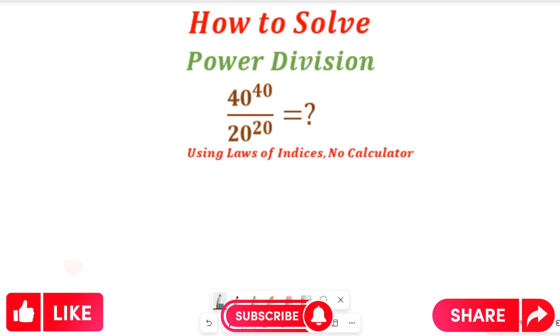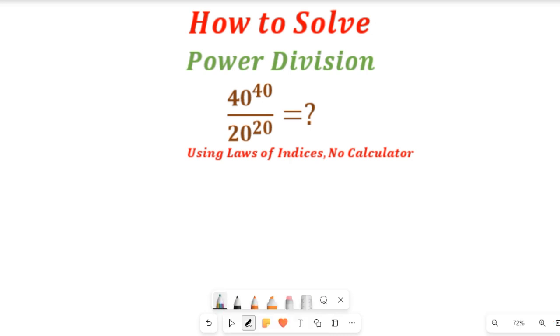Now let's get started. To simplify this without the use of a calculator, I want you to note something: in the numerator we have a power of 40, and in the denominator we have the power of 20.